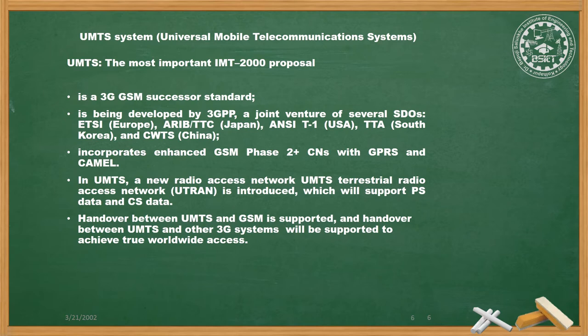So what is UMTS? UMTS means Universal Mobile Telecommunication System, and it was the most important IMT 2000 proposal — the International Mobile Telecommunication standard that came around the year 2000. It is a 3G GSM successor standard; the next standard after 3G GSM is UMTS.